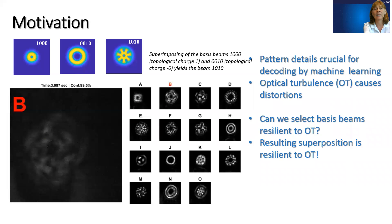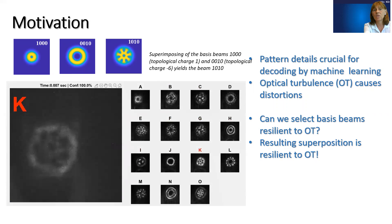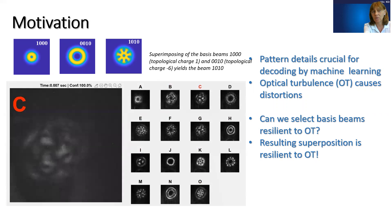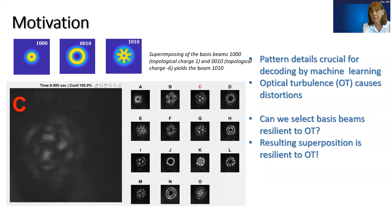We use basis beams. The basis beams are single topological charge beams that, when superimposed, create the symbols. What you have in this movie is our decoding of 15 letters that we created using four basis beams, and you can clearly see how the optical turbulence is deforming some of these messages, but the machine learning is capable of successfully decoding them.